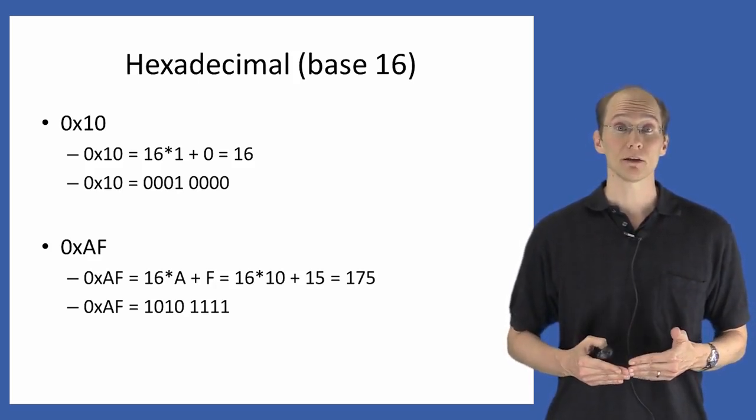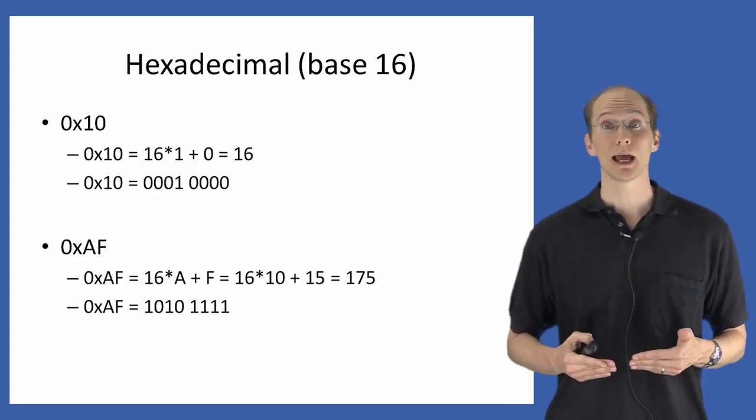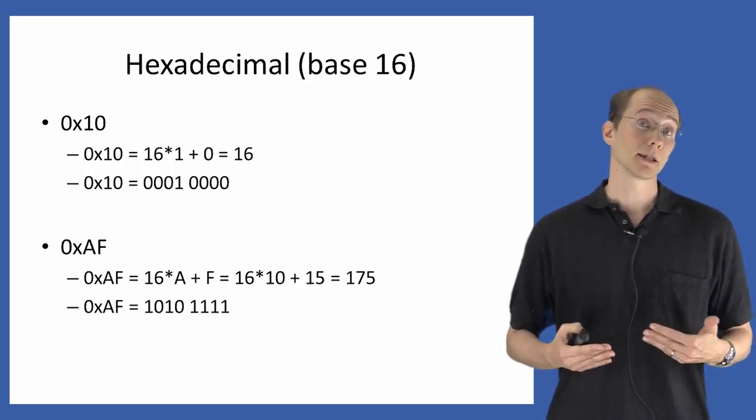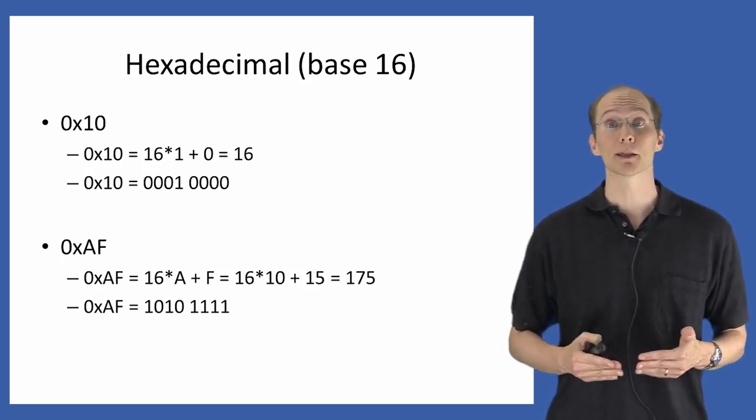The value of A is 10, the value of F is 15. So we have 16 times 10 plus 15 times 1 is equal to 175. And so the hex number AF is equal to the decimal number 175.